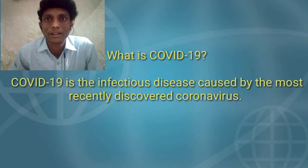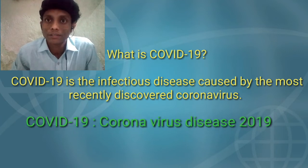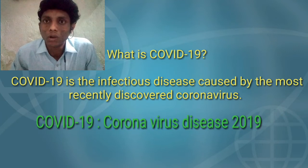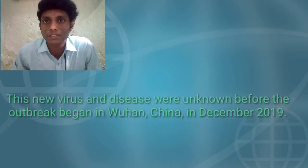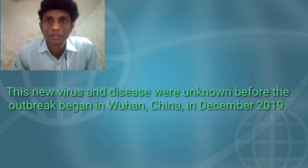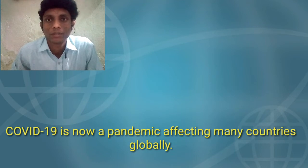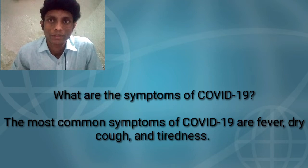Then what is COVID-19? COVID-19 is the infectious disease caused by the most recently discovered coronavirus, and COVID-19 means Coronavirus Disease 2019. This new virus and disease were unknown before the outbreak began in Wuhan, China in December 2019. Now it has become a pandemic all over the world.